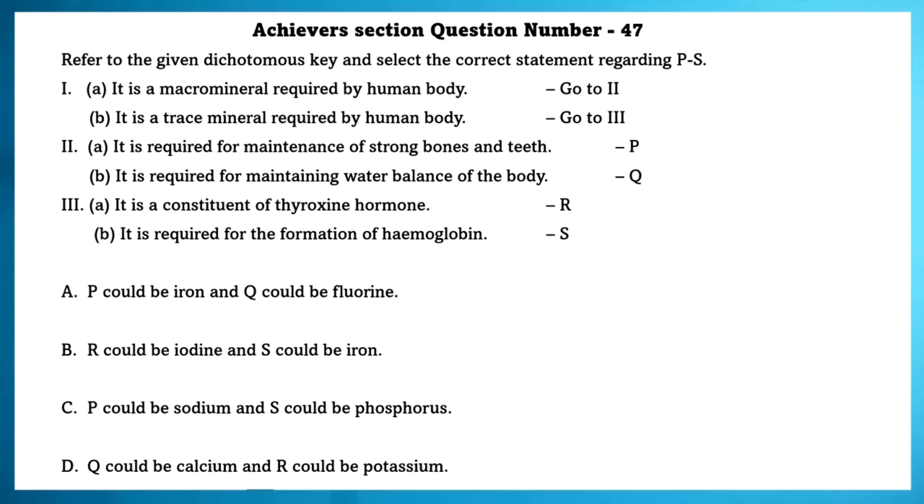Achieve section question number 47. Refer to the given dichotomous key and select the correct statements regarding P and S. It is a macromineral required by the body. It is required for maintenance of strong bones and teeth. It is required for maintaining water balance of the body. It is a trace mineral required by the body. It is a constituent of thyroxine hormone. It is required for the formation of hemoglobin. P could be calcium or vitamin D. Q could be vitamin D. R could be iron and S could be iron. Using this, we can check the options. As we can see, the B option is the correct option.